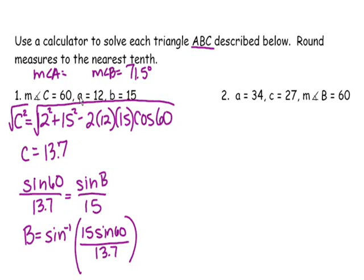Now I know two of the angles, so I can just add them together and subtract them from 180, which tells me that the measure of angle A is 48.5 degrees. And that's how I've solved my triangle.